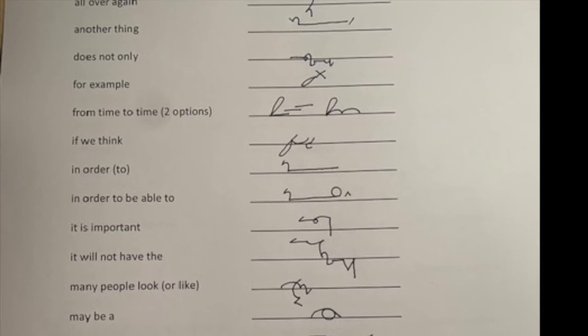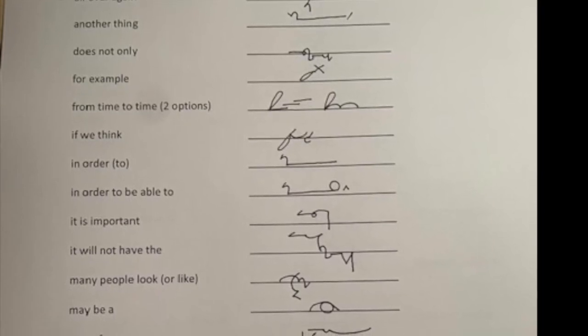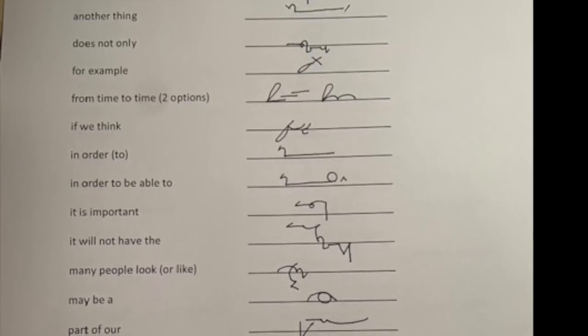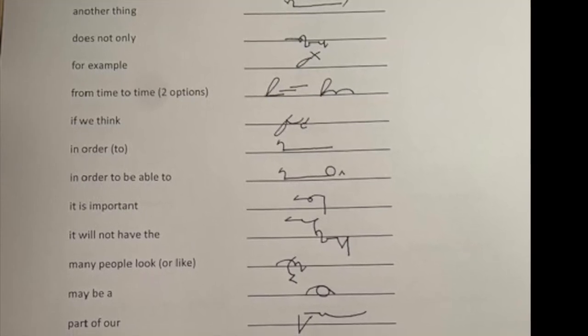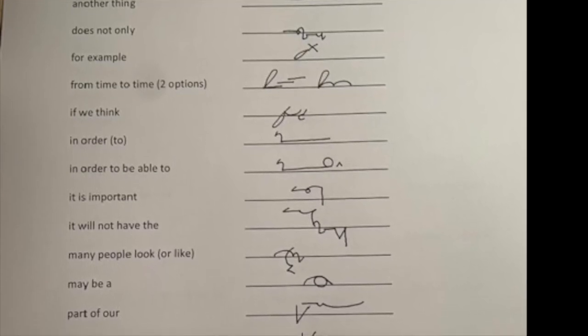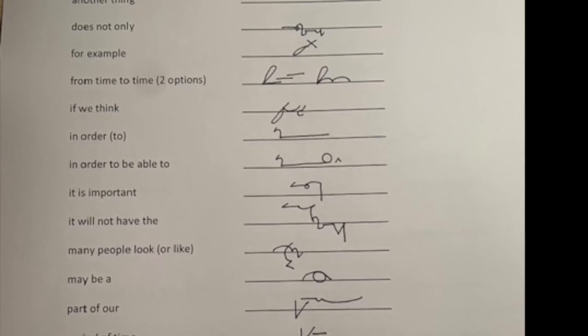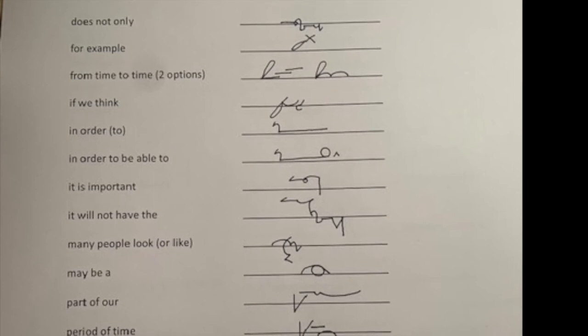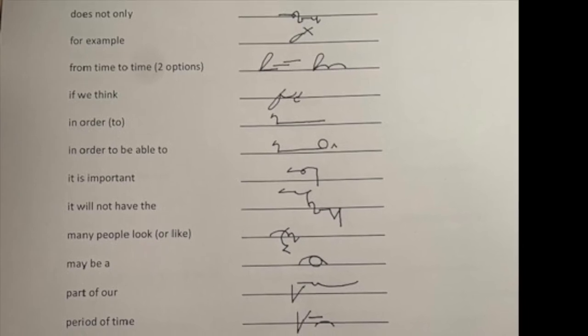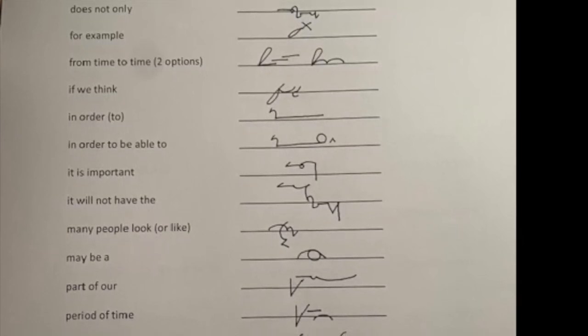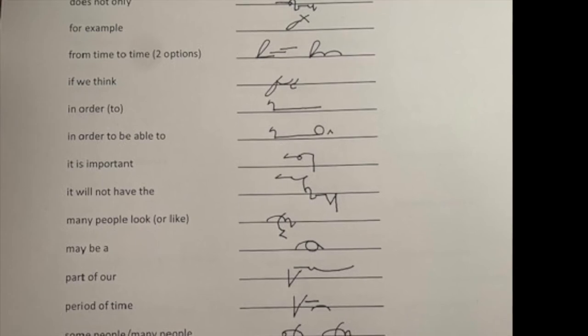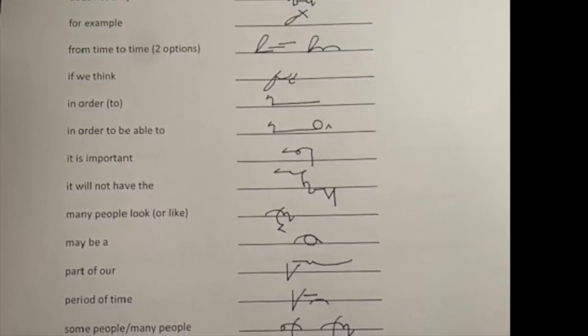Next one, if we think. So we're writing if we ink. In order with a long D doubled for R says in order and that's usually followed by the word to. Sometimes it's followed by the word that but if it's followed by the word to, we don't need to write the to, just in order. If it were followed by the word that, we would write the H joined onto the DR blend with the T through it in order that. So, when we want to write in order to be able to. The DR of order can also do the work of the T of 2. So we just put the big circle for B and the able to disjoined. Beautiful phrase.